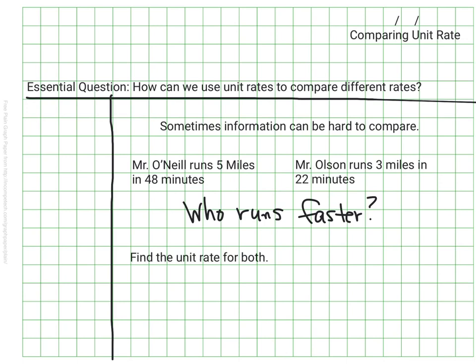There's more than one way to assess this, but one thing we could do is to find the unit rate for both Mr. O'Neill and Mr. Olson. After all, if we know how long it takes each of them to run just one mile, we'll have a common rate that we can use to compare.